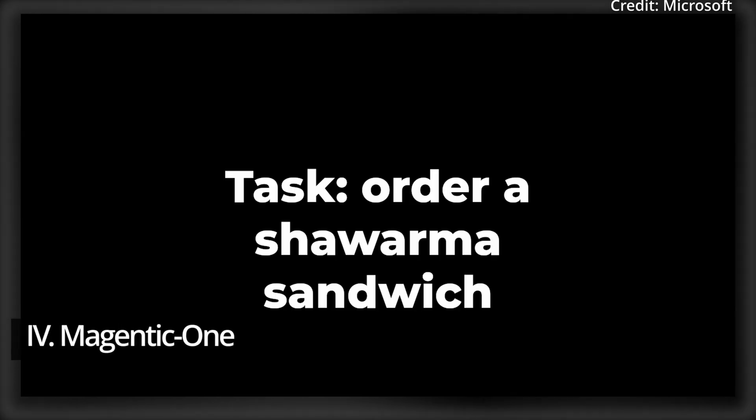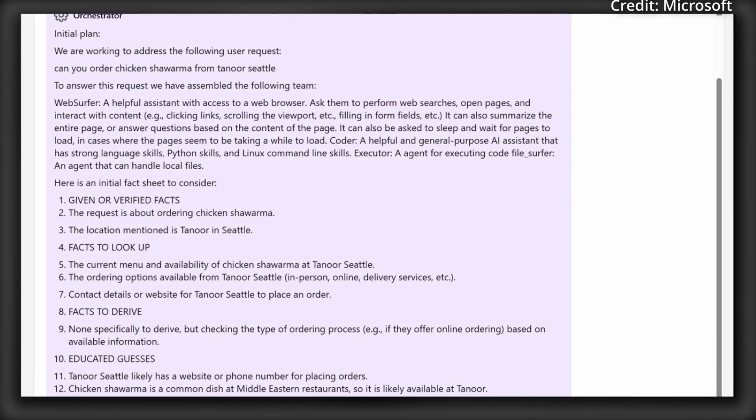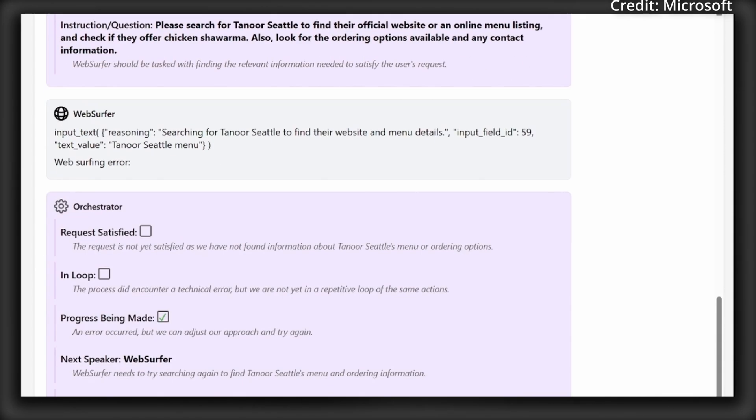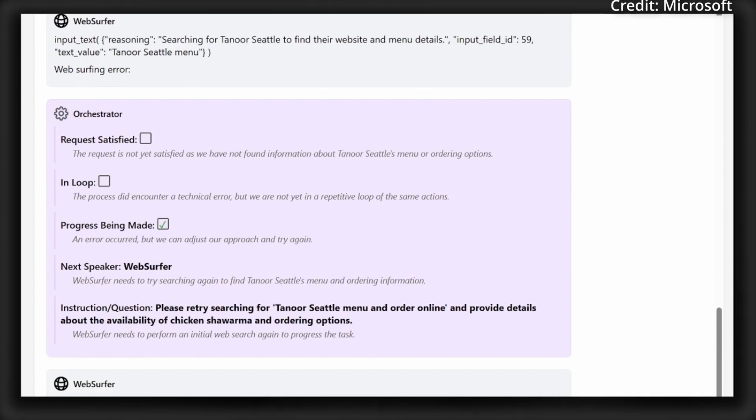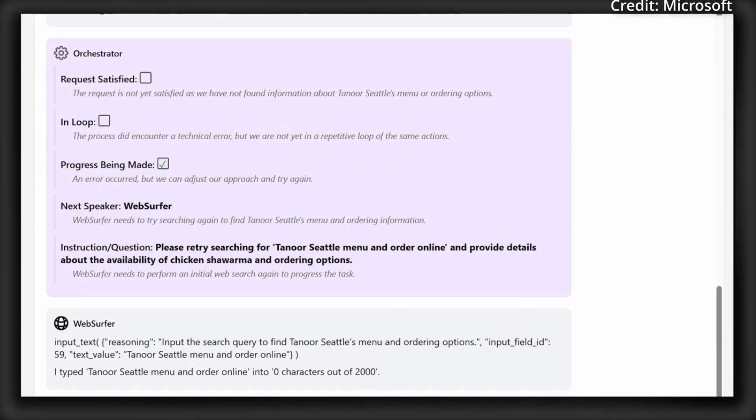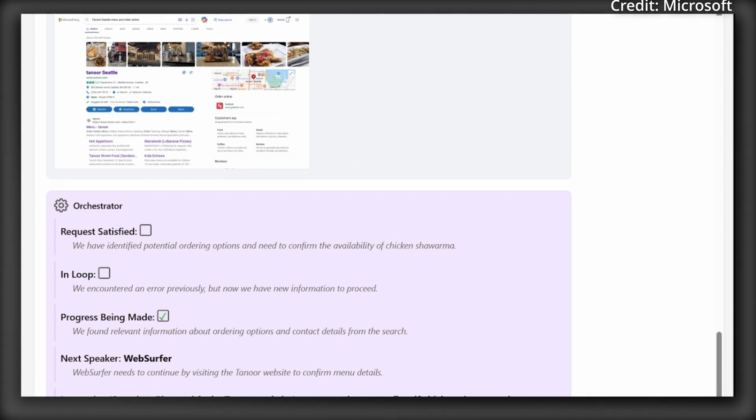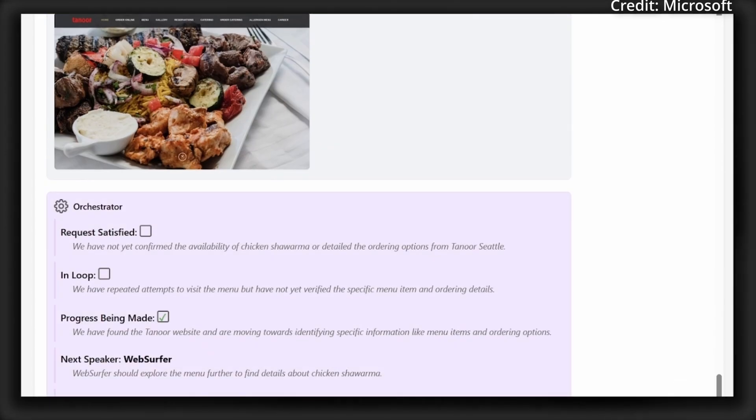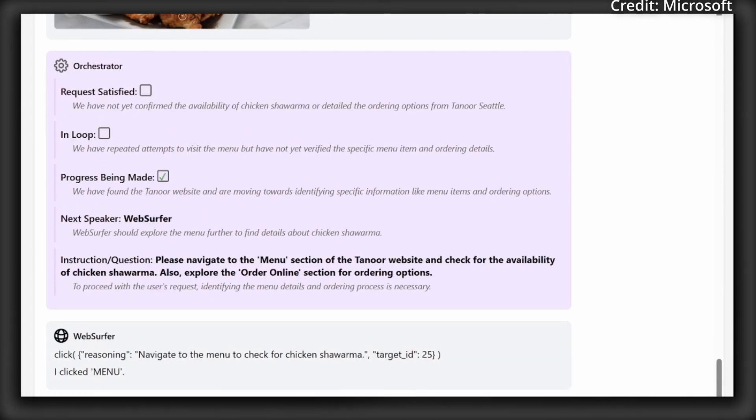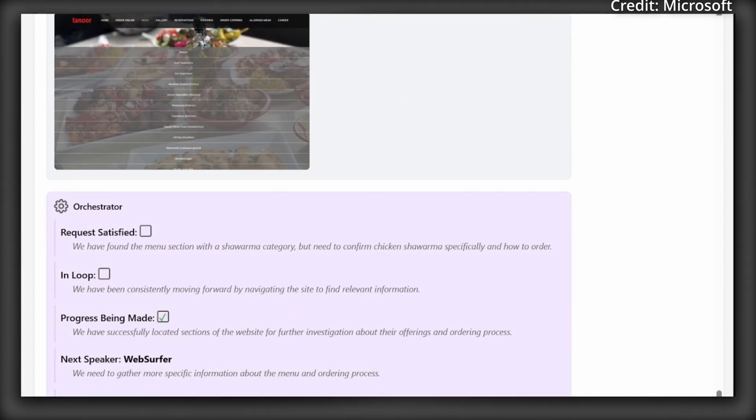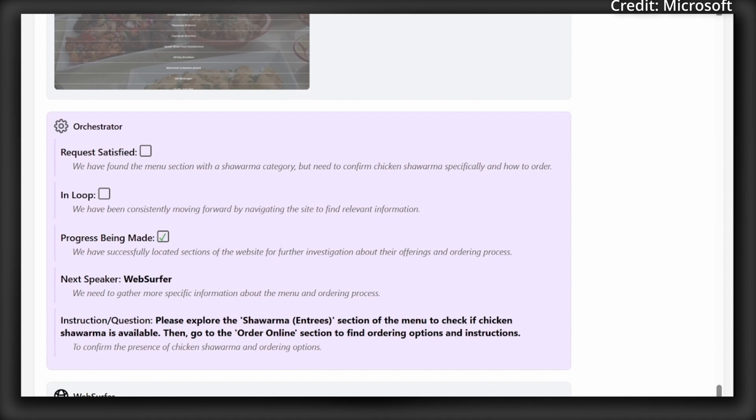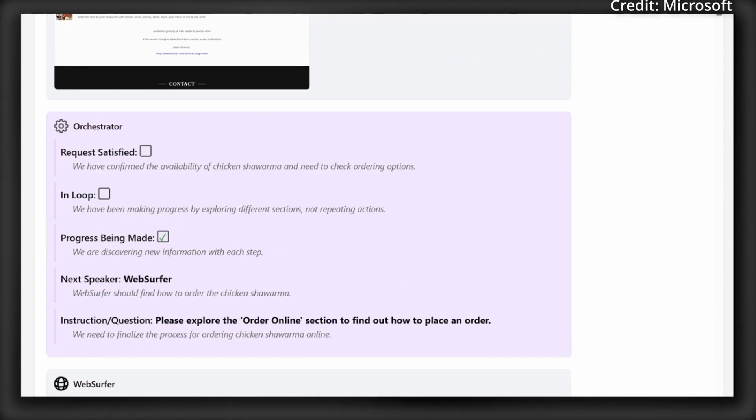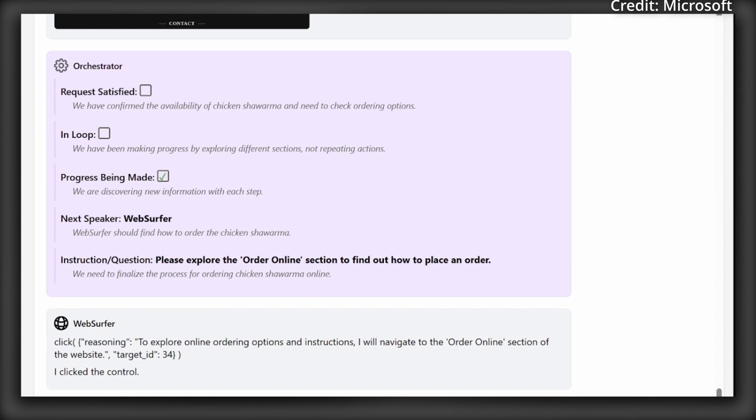And finally, Microsoft Research demoed its Magentic One, an AI system using multiple specialized agents for complex tasks, which in this case completed a real-world transaction on the internet. It worked by having a main coordinator oversee task planning, progress tracking, and problem solving. Next, four agents handle web browsing, file management, code writing, and execution, with this modular approach allowing for easy updates and a reduction of resource needs.